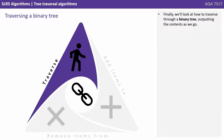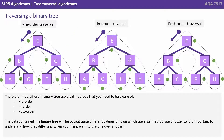Finally, we'll look at how to traverse through a binary tree, outputting the contents as we go. There are three different binary tree traversal methods that you need to be aware of: pre-order, in-order, and post-order. The data contained in a binary tree will be output quite differently depending on which traversal method you choose, so it's important to understand how they differ and when you might want to use one over another.